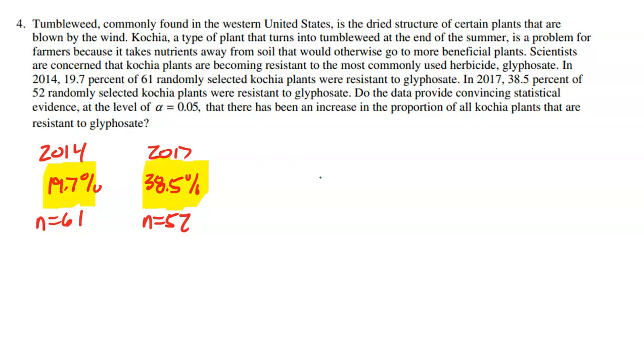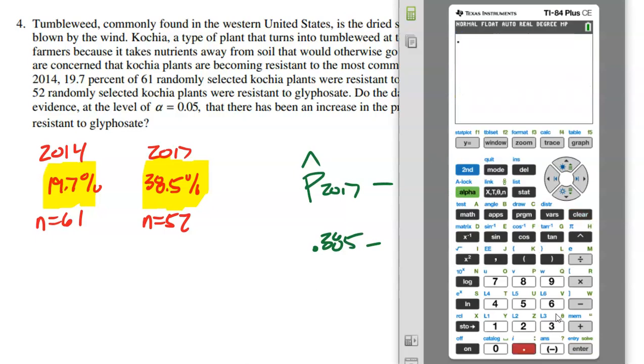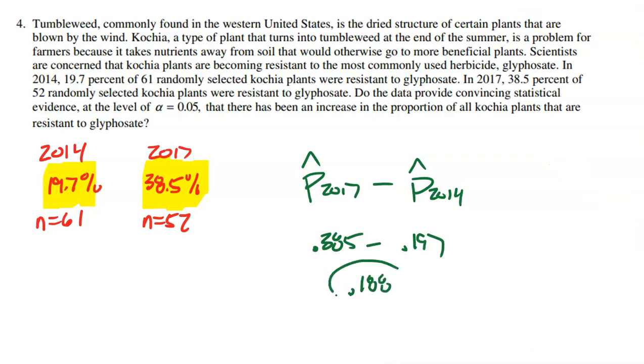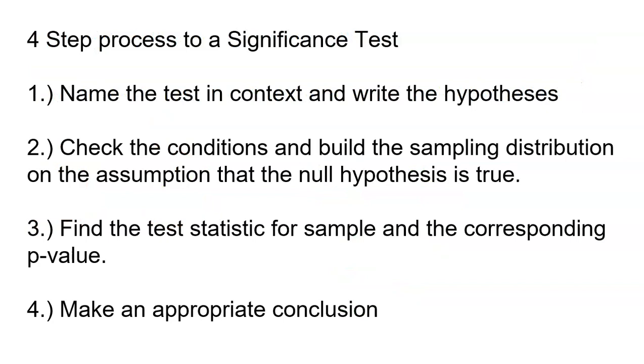What we have to do is run a test here. We have to determine if this difference, the proportion from 2017 minus the proportion from 2014, that's 0.385 minus 0.197, a difference of 0.188 or 18.8%. Is that such a change that we could officially say that the proportion in 2017 of Kochia plants that are resistant to this herbicide is definitely increased?